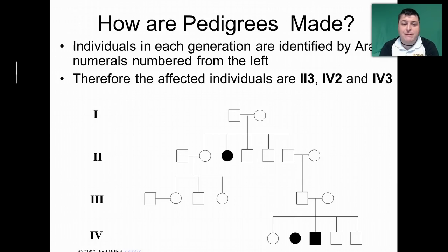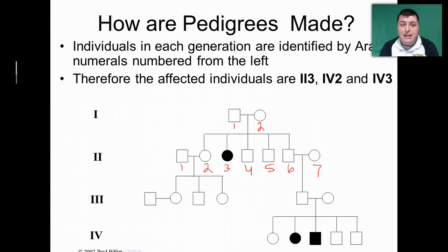Individuals in each generation are indicated by Arabic numbers. So we would refer to individuals as Roman numeral one-one, Roman numeral one-two, two-one, two-two, two-three, and so on. That way, if we don't know the people in question, we can refer to them based upon their position in the pedigree.